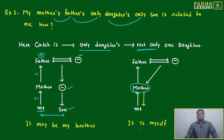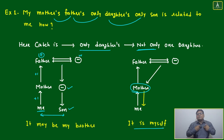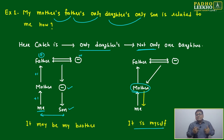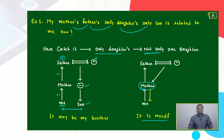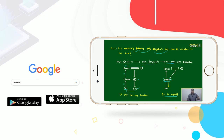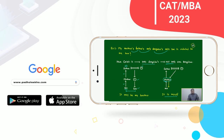If it is only one daughter, then that daughter is my mother herself, and the relation is telling about myself — me and this person are the same. But if it is not only one — if there is one daughter here and another daughter there — then this son will be my brother. So the answer is: it may be myself, or it may be my brother.